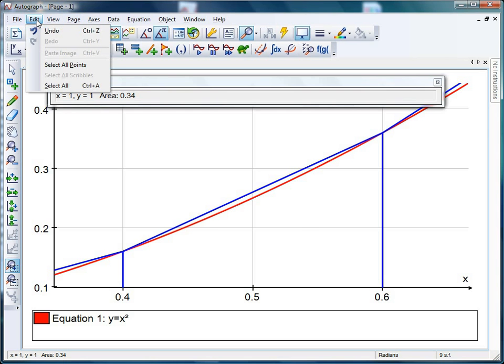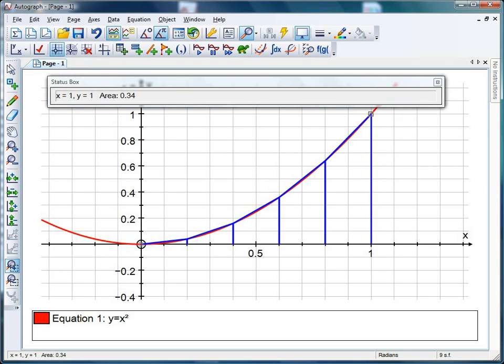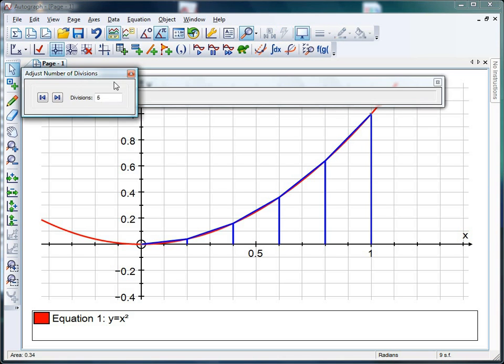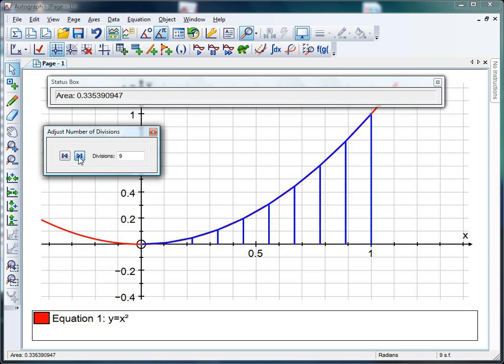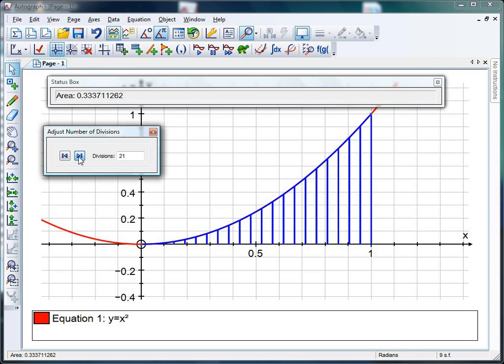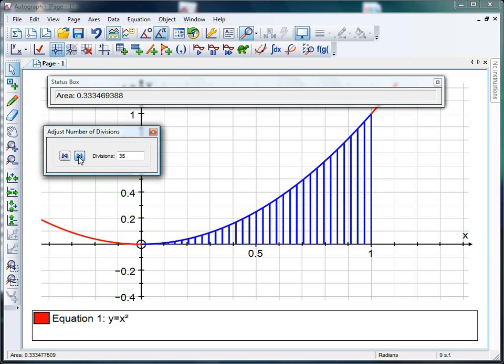I'm just going to undo that to get back to my original view there. Likewise, I can do the same thing again here. Select my trapeziums, my little lightning bolt pops up, and I can increase the number of divisions and see what happens to the area. Again, it seems to be reaching some kind of limit.